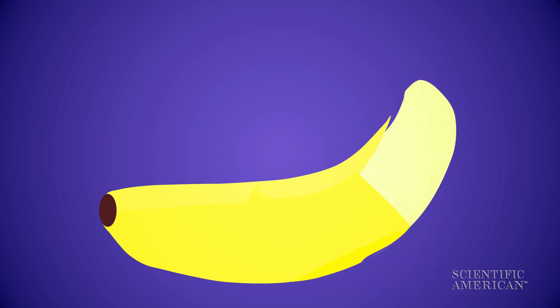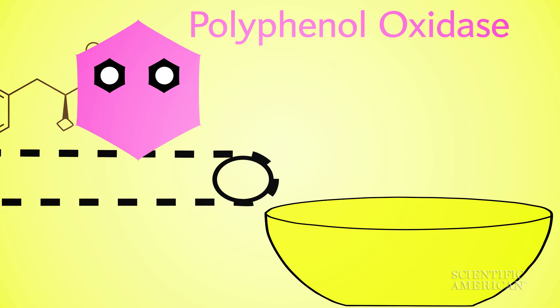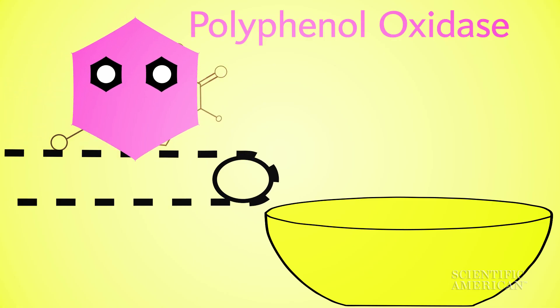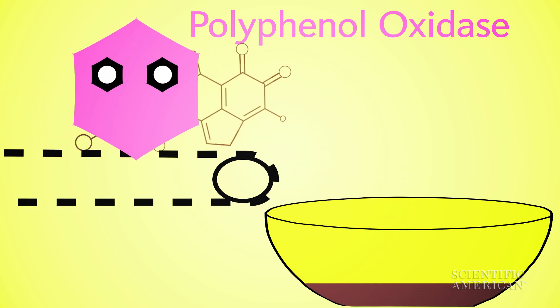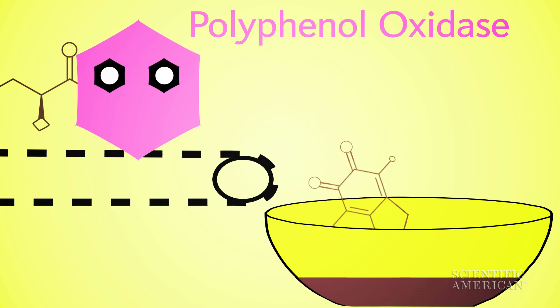Yum, but why do bananas turn brown? Another enzyme called polyphenol oxidase speeds up the oxidation and reaction of organic compounds called phenols, creating the same melanin pigment found in our skin, hair, and eyes.